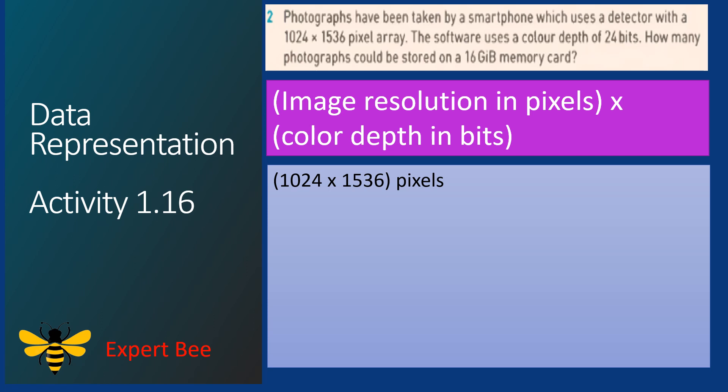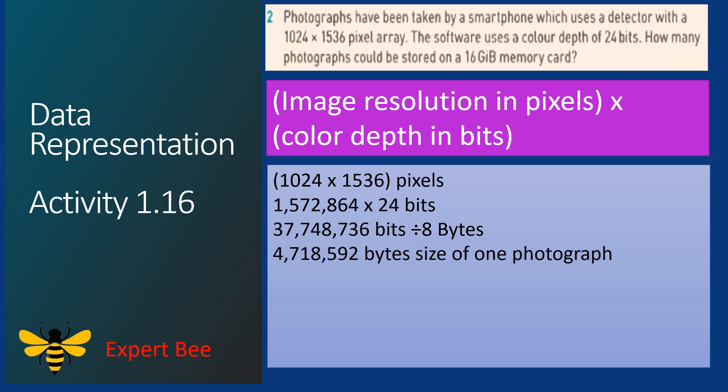1024 × 1536 = 1,572,864 pixels. We multiply with 24, the color depth, to get 37,748,736 bits. Dividing by 8 gives 4,718,592 bytes. This is the size of 1 photograph.